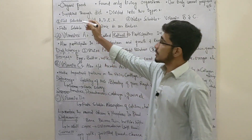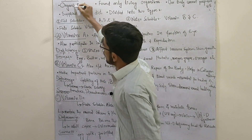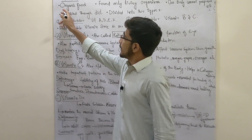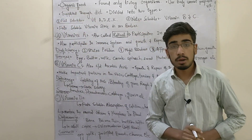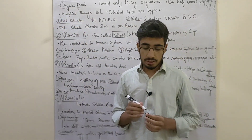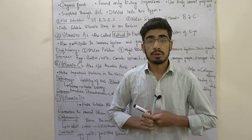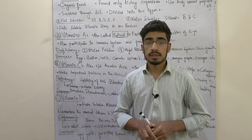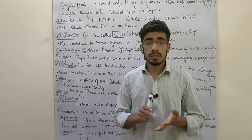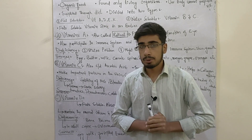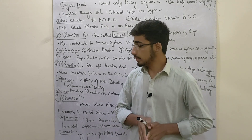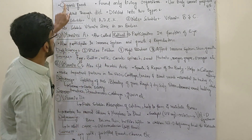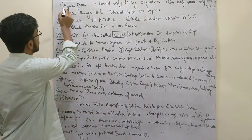Vitamin A is an organic compound. In the previous lecture, we discussed what is an organic compound. An organic compound is an organic compound. So vitamin A is an organic compound.